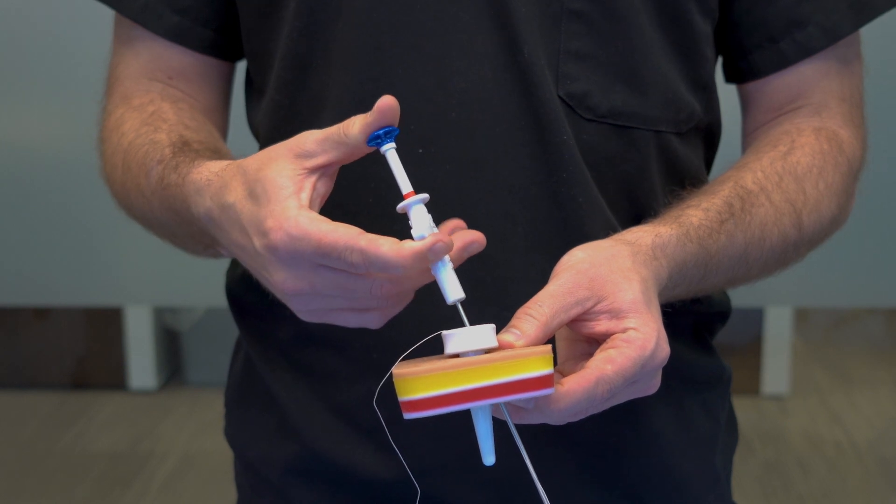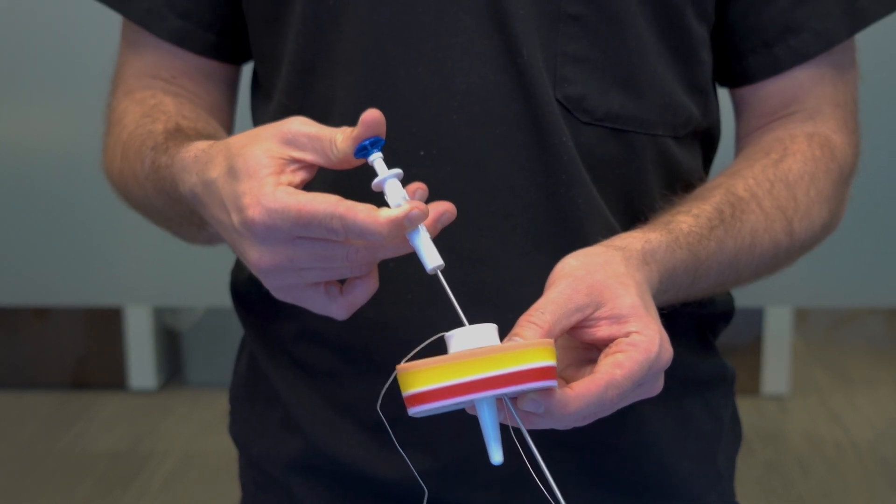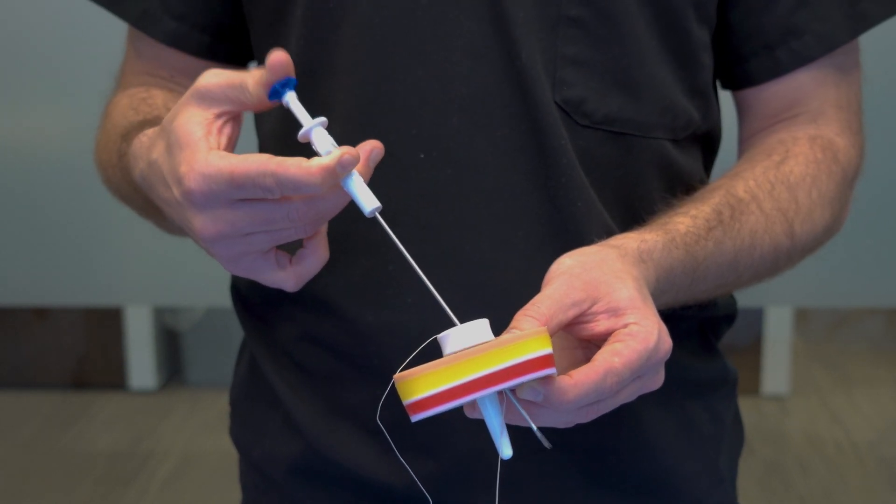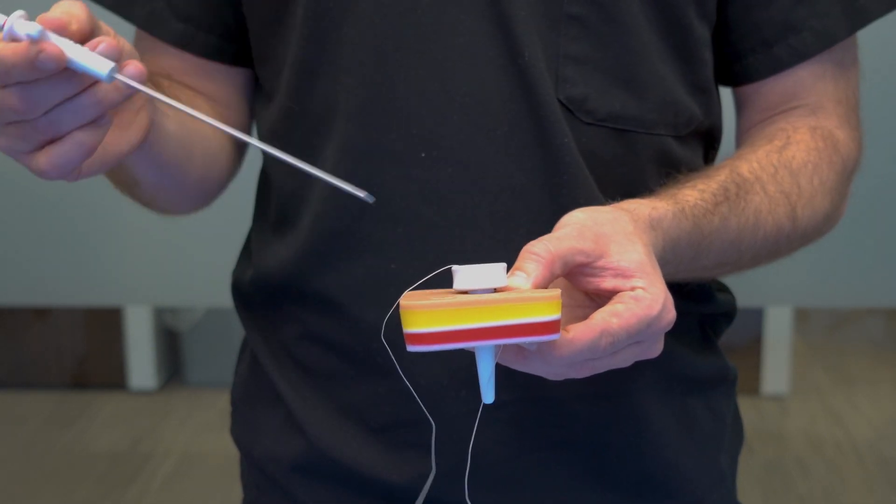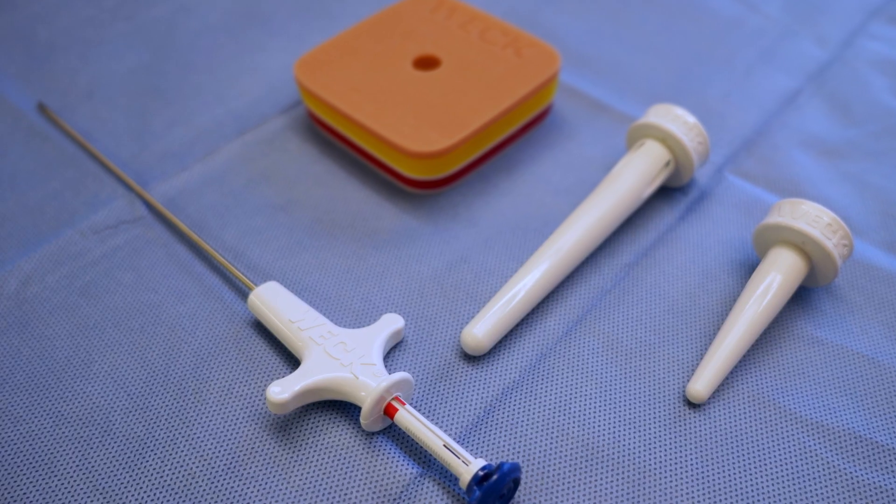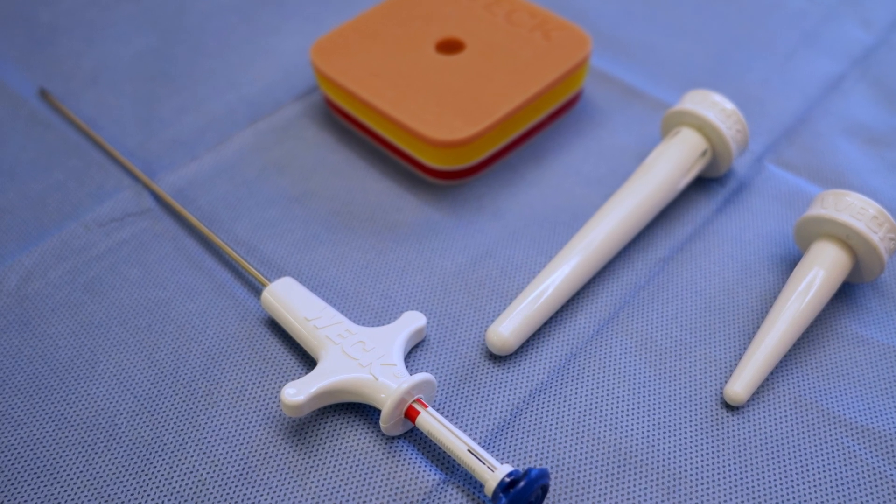Once the passer tip is through the soft tissue, press the button to release the suture from the suture passer. Release the button and remove the suture passer from the body. Ensure jaws are closed and the red band is showing.